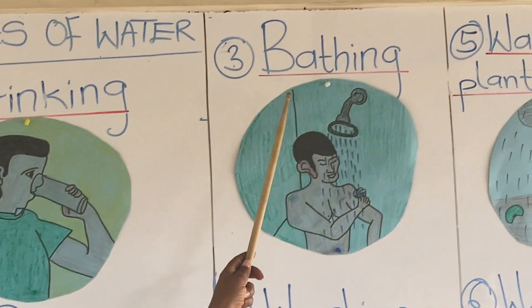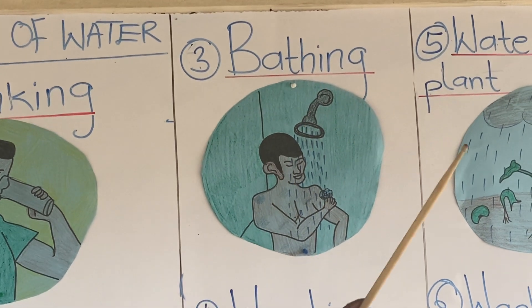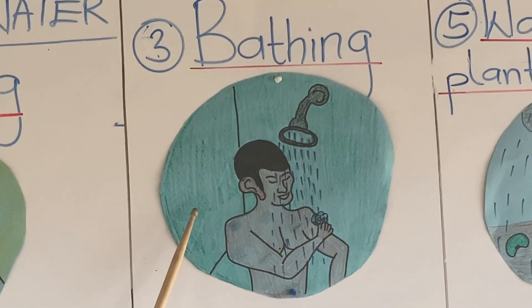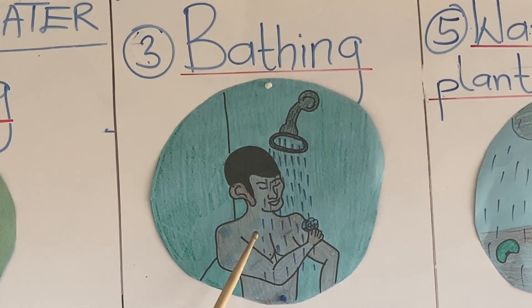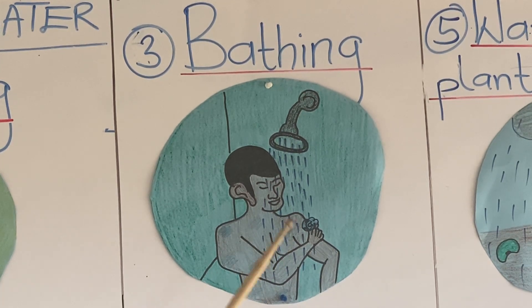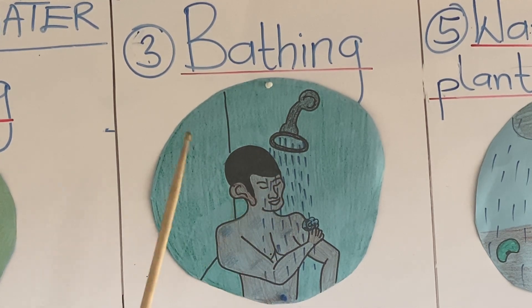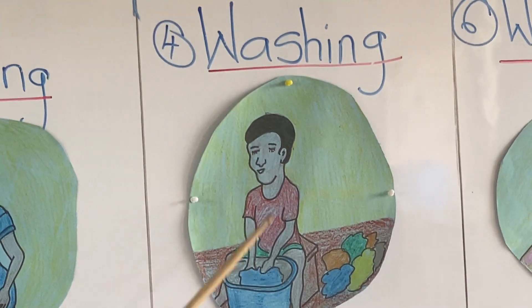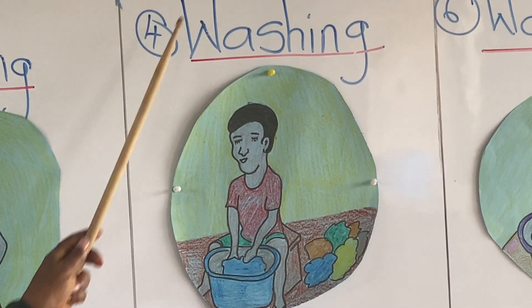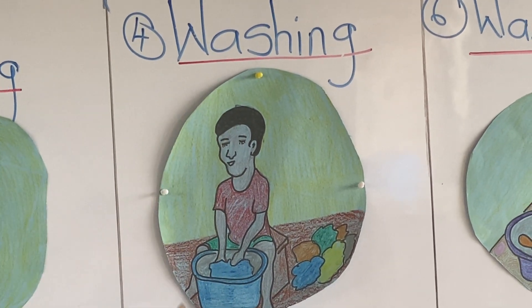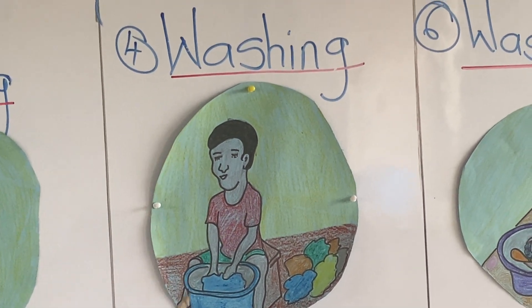Water is also used for bathing. When we get dirty, we bathe ourselves, also in the morning and in the evening, and we use water for bathing. Water is used for washing clothes. When our clothes get dirty, we use water to wash our dirty clothes.